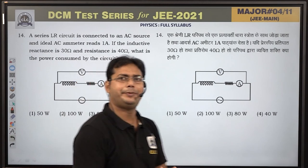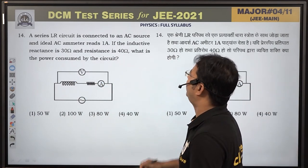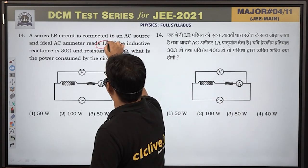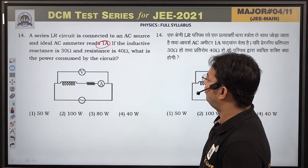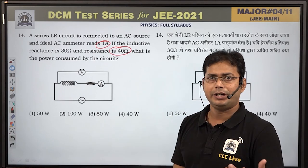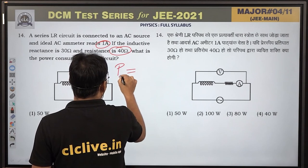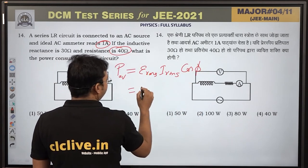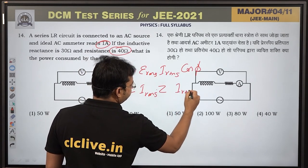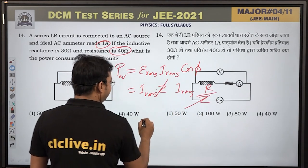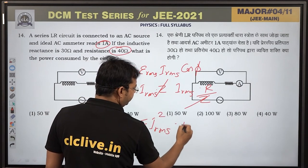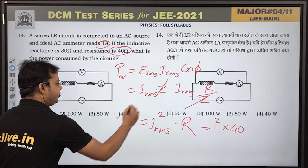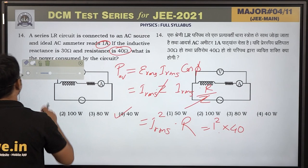Question number 14: A series LR circuit is connected to an AC source. The ammeter reads 1 A. Inductive reactance X_L = 30 Ω, resistance R = 40 Ω. Average power = I²_RMS × R = 1² × 40 = 40 W. Option number 4 is correct.